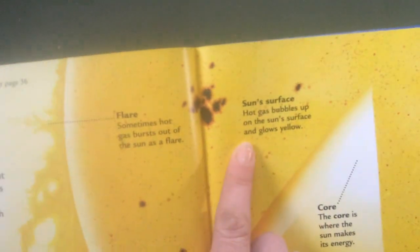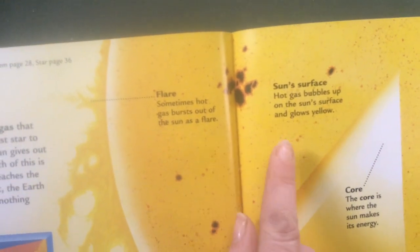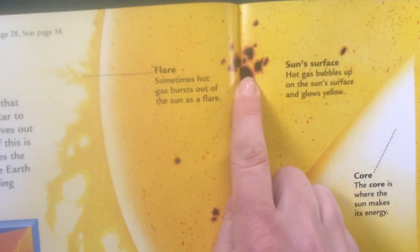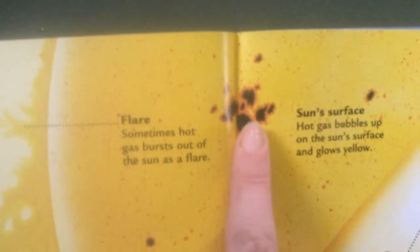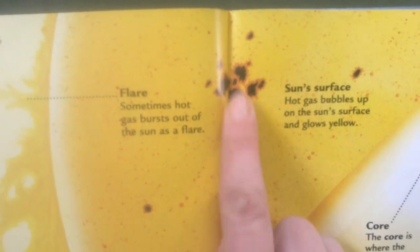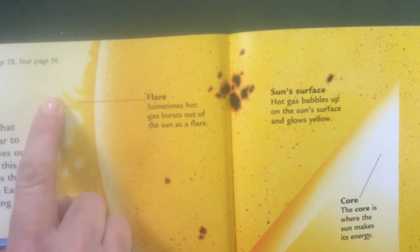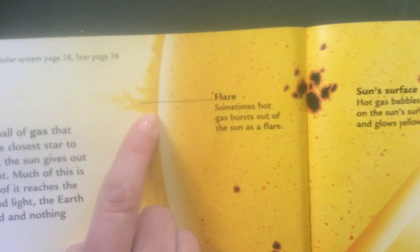And then, the sun's surface is where the hot gases bubble up on the sun's surface and glows yellow. And these are sun spots. Those are different temperature of gases that makes little black spots on the sun. And these that come out, sometimes hot gases burst out of the sun and it's called a flare.